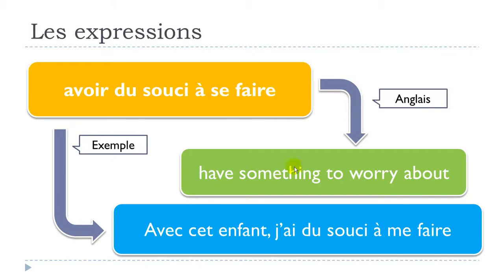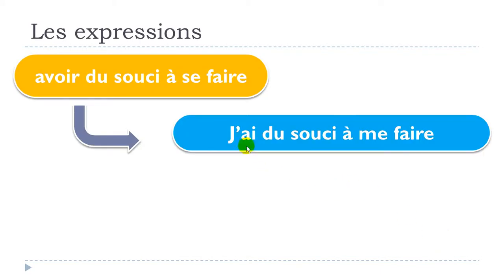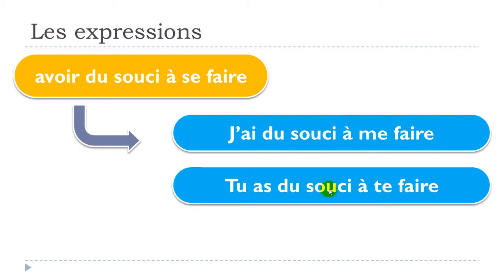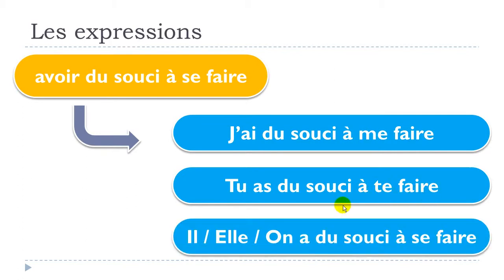You get SE here, and in that case you will have to modify it because the subject is JE — the first person, I. So: j'ai du souci à ME faire. For TU: tu as du souci à TE faire. And for IL, ELLE or ON: a du souci à SE faire. So keep in mind: ME for the first person, TE for the second, and SE for the third person singular.